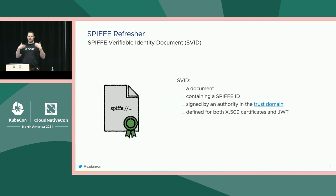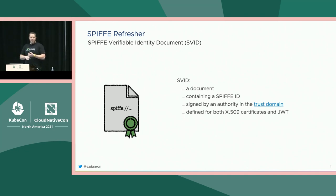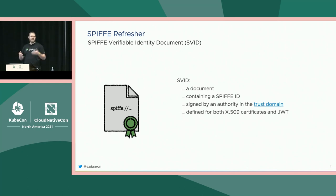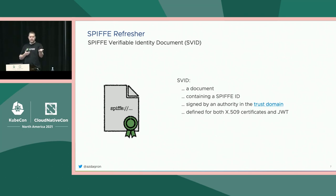You want to be able to assert this SPIFFE ID cryptographically, so we put it into a document called an SVID. We've got both X.509 and JWT documents within the specifications for SVIDs. This is just a signed document over that ID, signed by an authority within that trust domain. This is what workloads present as their proof of identity.